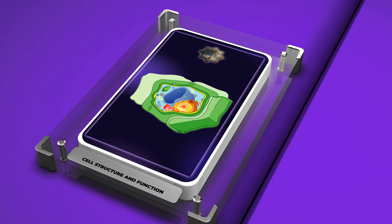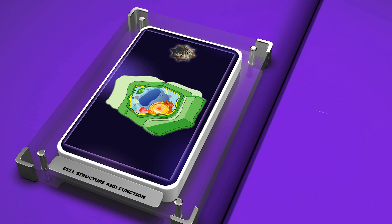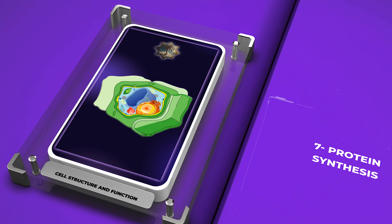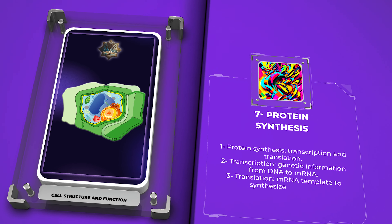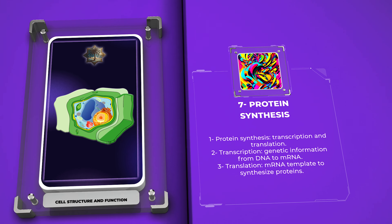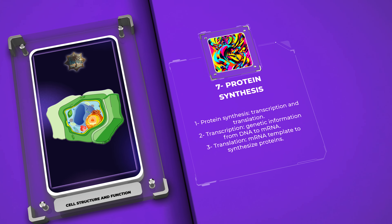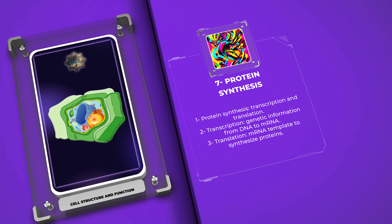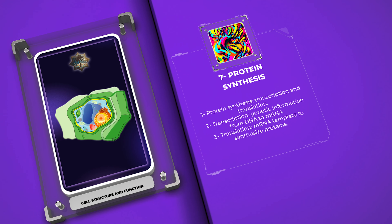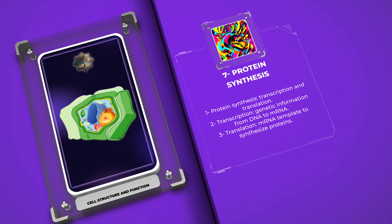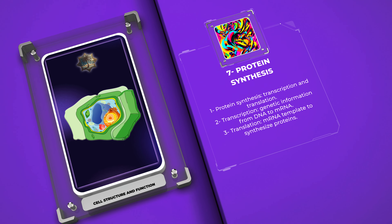Protein synthesis is a fundamental process that occurs within cells and is responsible for the production of functional proteins. It involves transcription, where genetic information is transcribed from DNA to mRNA, and translation, where the mRNA is used as a template to synthesize proteins. This intricate process relies on the precise coordination of numerous molecular components.